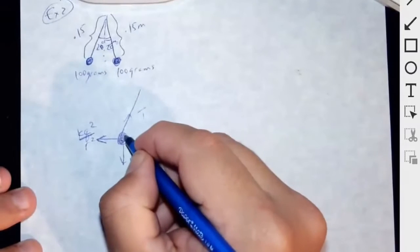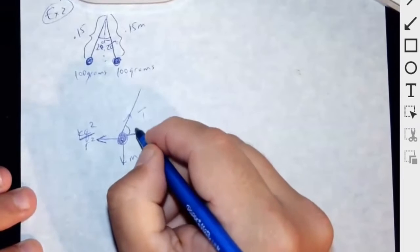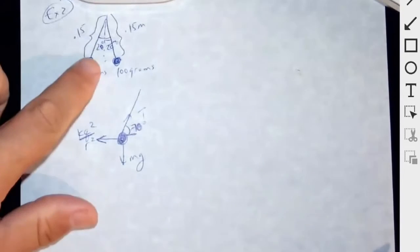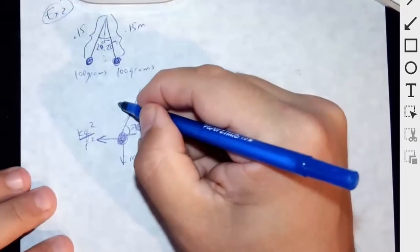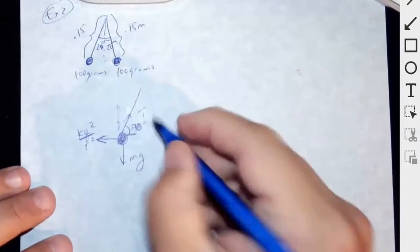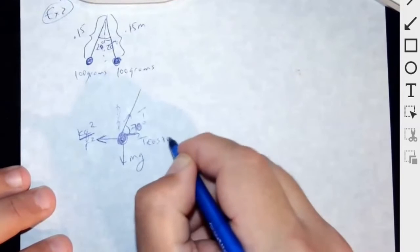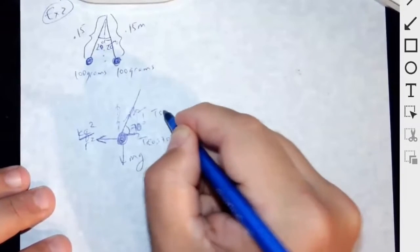Now let's break this up into components. This time this is going to be opposite, right? So this is going to be 70. So this is going to be 70 and then this one here. I just break this up into components. T cosine of 70 and then this is going to be T sine of 70.